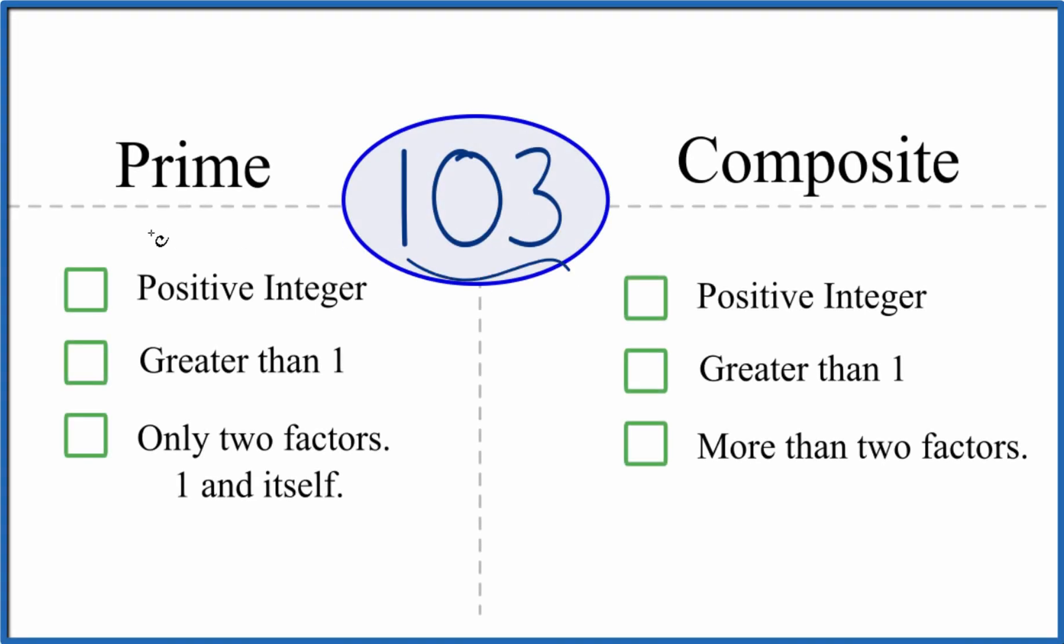So is 103 a prime or a composite number? And here's how you can tell. Let's see first if 103 is prime.